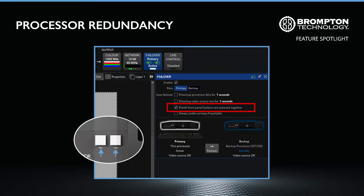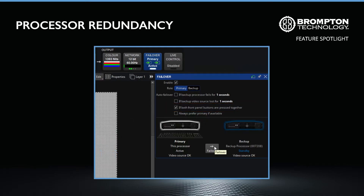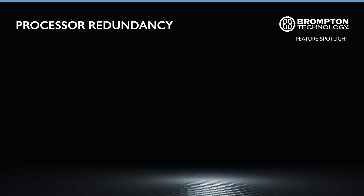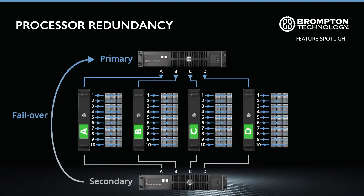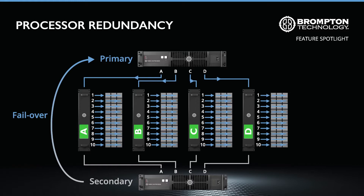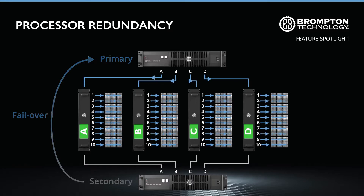When a failover is initiated, the secondary processor will take over as primary and automatically re-associate all the panels. Should the fault be remedied, it is also possible to allow the system to failover back to using the original primary processor.